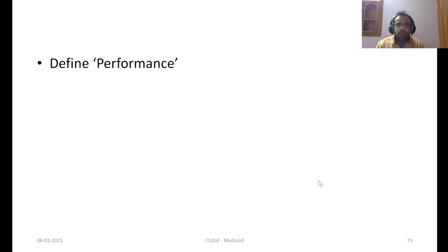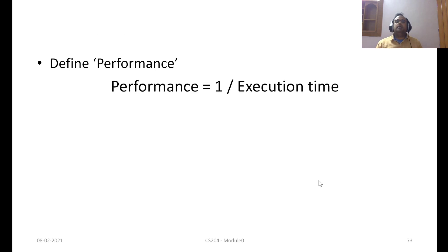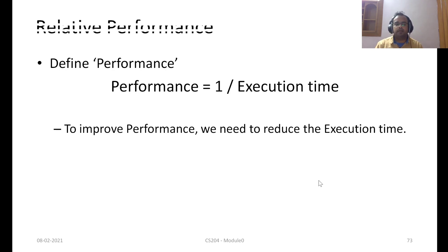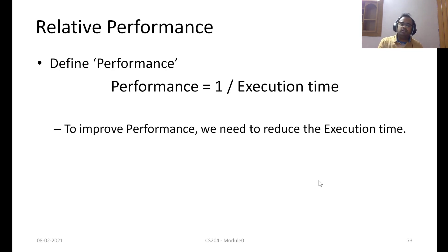If you want to define performance, it would be equal to 1 divided by the execution time. To improve performance, the obvious thing is to decrease the execution time. Using this simple performance definition, let's try to understand what relative performance is.